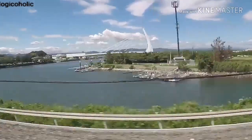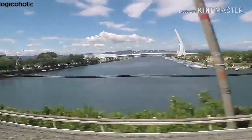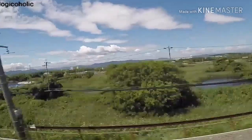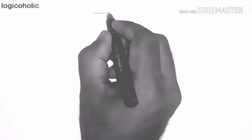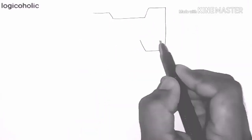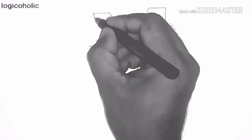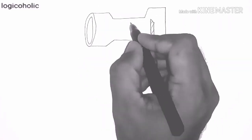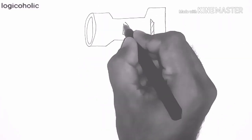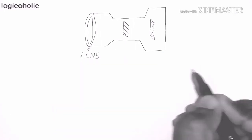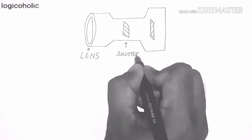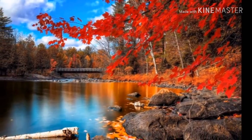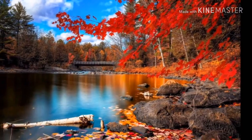Before knowing the reason behind bending poles, we must know how a camera works. Here I am drawing a very simple camera assembly — a camera consisting of mainly three things: a lens, a shutter, and a sensor. As the shutter opens, light falls on the sensor and it captures images.